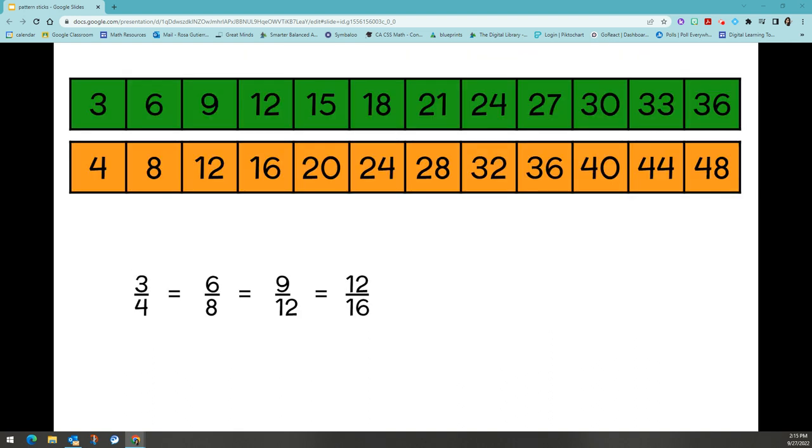Upper grade students can also take a look at equivalent fractions through the use of pattern sticks. If my fraction is 3 fourths, I can see that 6 eighths, 9 twelfths, etc. are equivalent fractions.